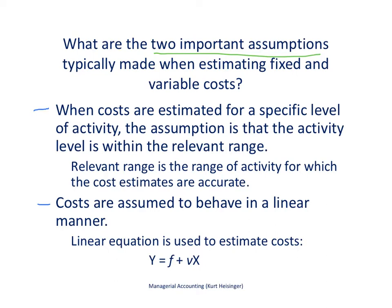Here we're going to talk about the two important assumptions that are made in going through that process. First of all, when costs are estimated for a specific level of activity, we're really assuming that the activity level is within the relevant range. This is a very important concept. The relevant range is the range of activity for which the cost estimates are accurate.